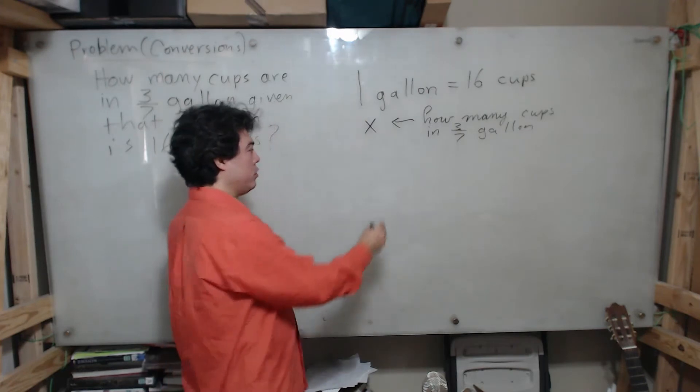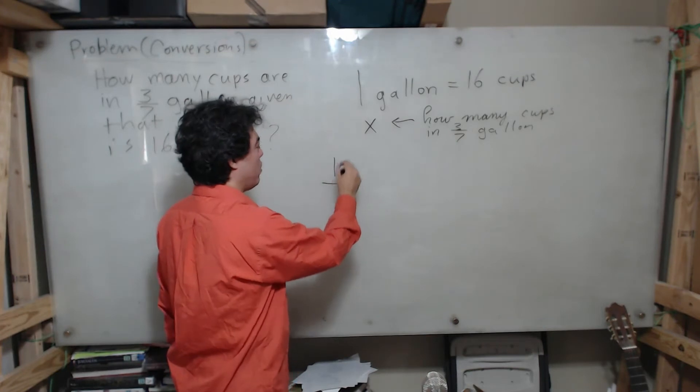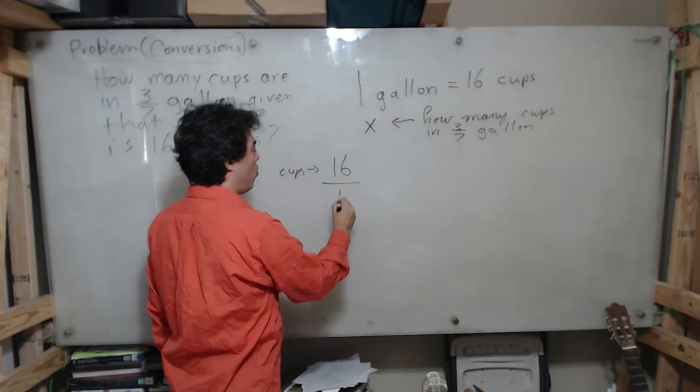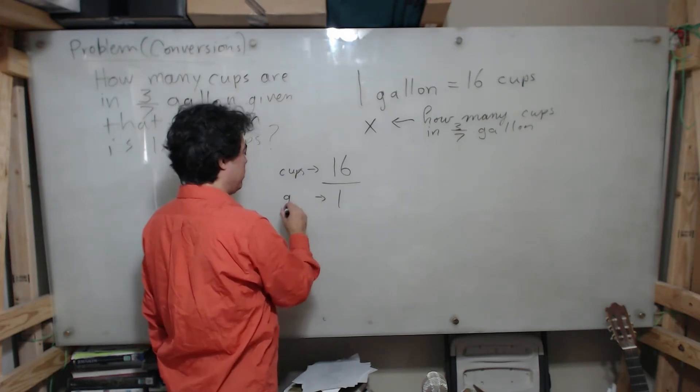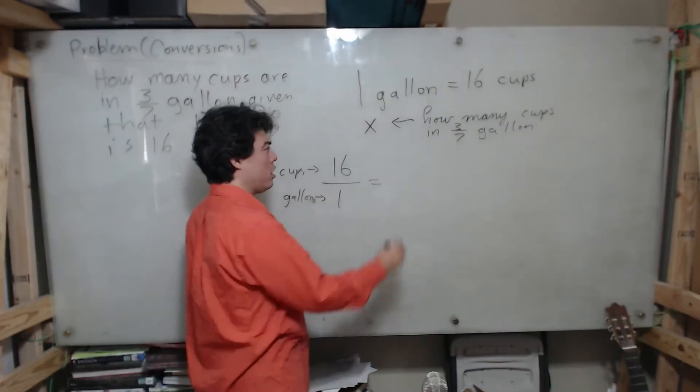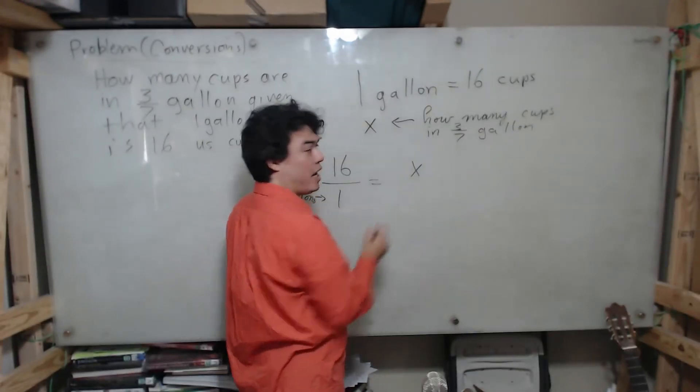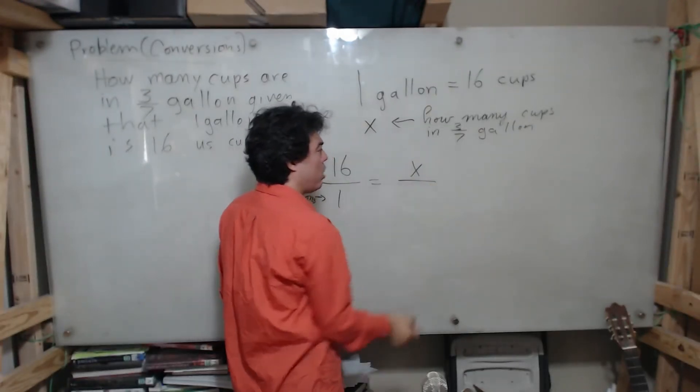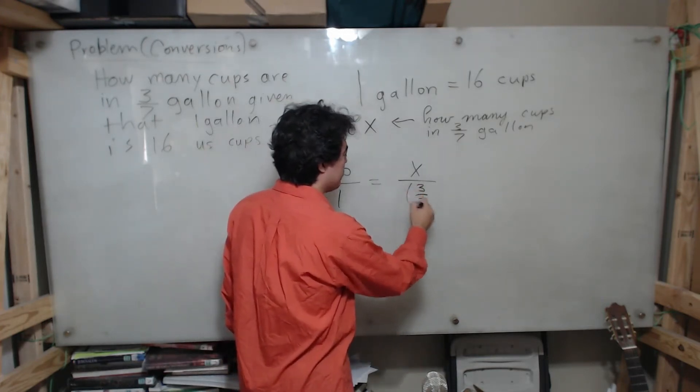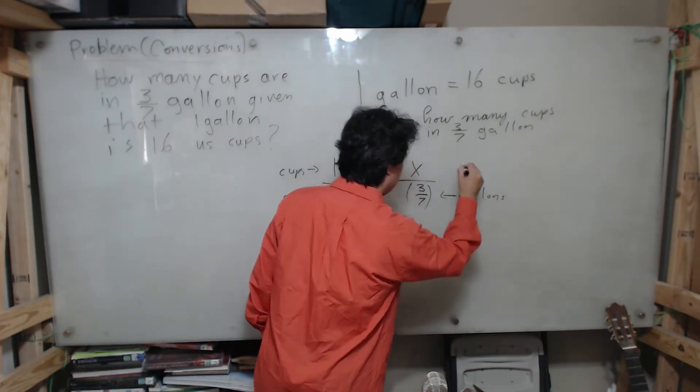Okay, so now I'm going to set up our proportion. I want to put cups on top, so 16 will be cups, 1 will be gallons. Equals - since on the left I put cups on top, I'm going to put cups on top on the right - my x. On the bottom I'm going to put how many gallons, which will be 3 over 7. This is gallons, these are cups.